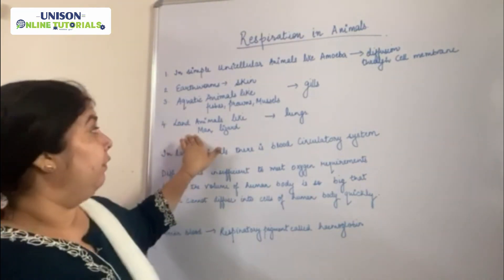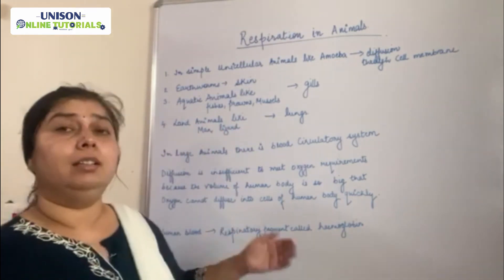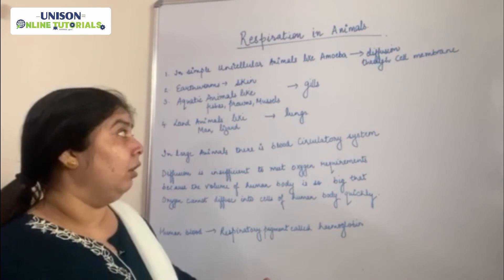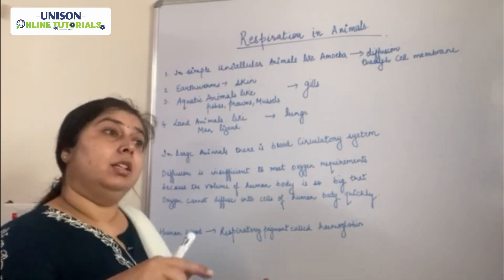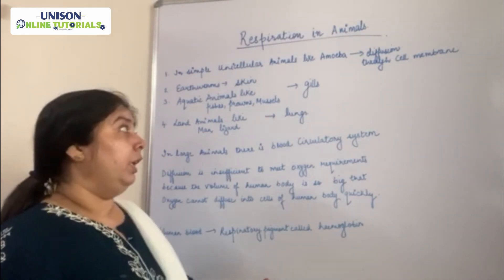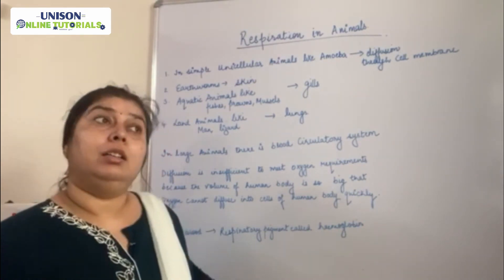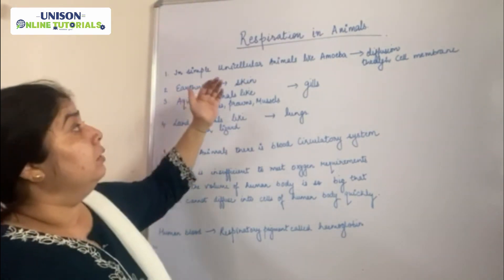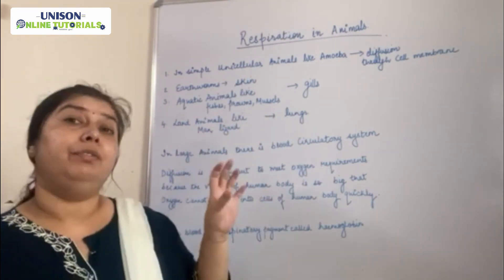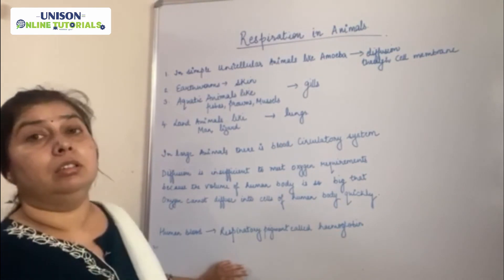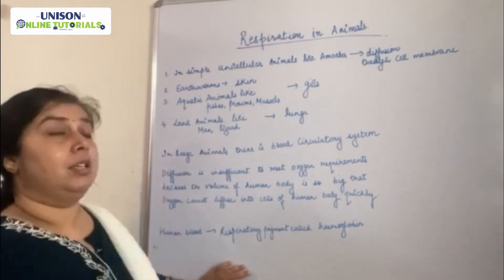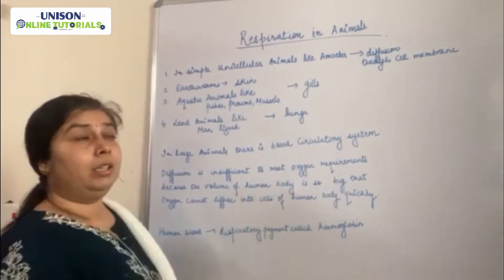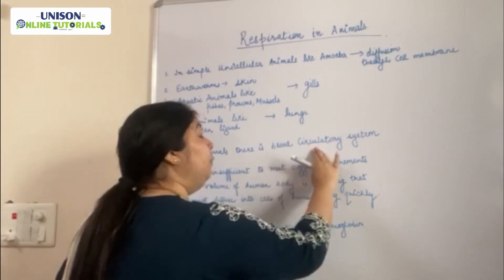In land animals like us, lizards, and other terrestrial animals, the organ responsible for respiration is lungs. Lungs take in oxygen, which is then transported to each and every cell of the body through the blood circulatory system, and finally carbon dioxide is given out. So in multicellular organisms, different specific organs are assigned for the process of respiration, and there is a blood circulatory system.